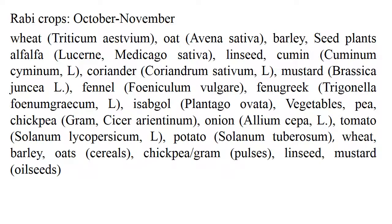Rabi crops are generally sown during October–November and harvested during February or March. The crops include Wheat, Oat, Barley, Alfalfa, Linseed, Cumin, Coriander, Mustard, Fennel, Fenugreek, Isabgol, different vegetables such as Pea, Chickpea, Onion, Tomato, Potato, and also Barley, Pea, Chickpea, Linseed, and Mustard.